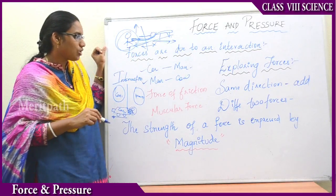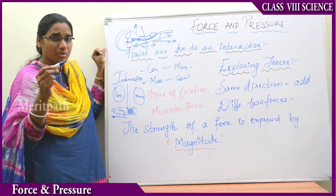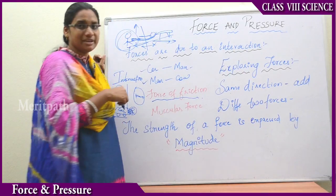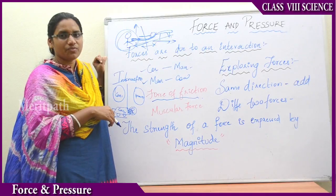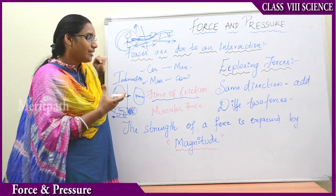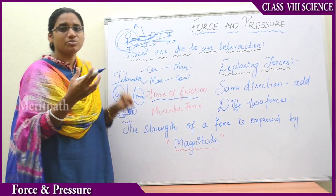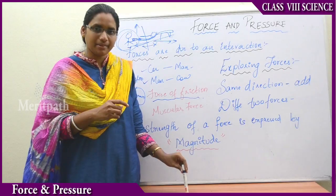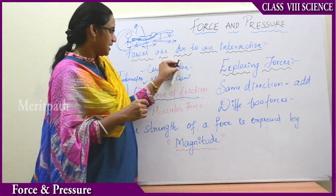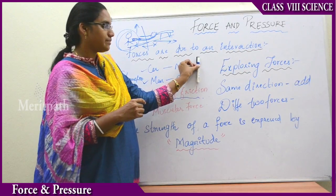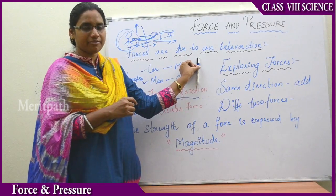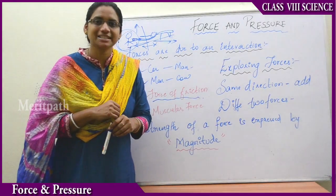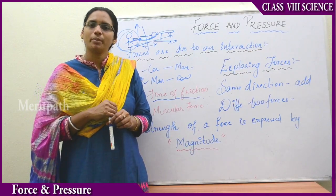Let us see another concept: the force of friction. Whenever two objects or the surfaces of objects are in contact with each other, the force of friction comes into picture. The frictional force exhibited on the surfaces of objects is the main reason behind objects being stopped. If I am moving a thread on this table, at some instant it will be stopped because the frictional force acts on the surfaces in the opposite direction to the movement of the object. Therefore, frictional forces act in a direction opposite to the movement of the object.